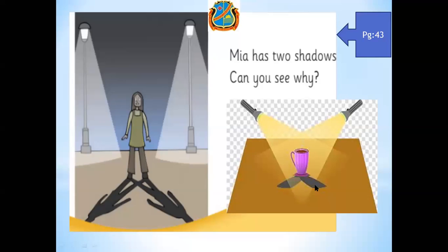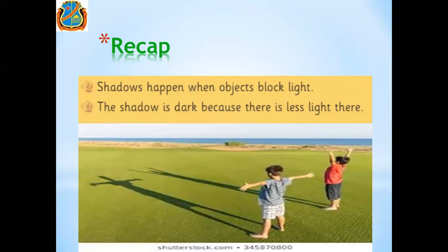Very good class — this means you are understanding what I'm telling you. Now we will do a recap because we have short time. Shadows happen when objects block light. The shadow is dark because there is less light.